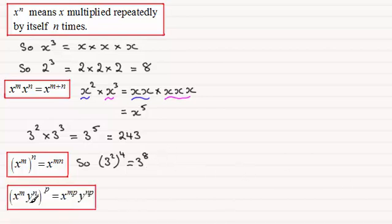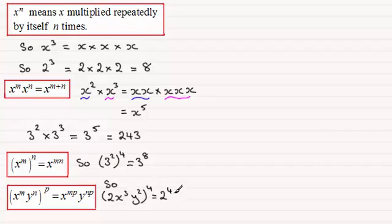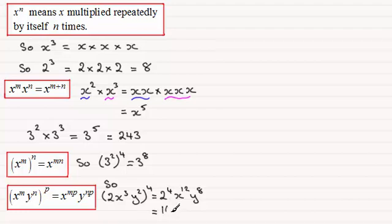There's also this rule: when you've got x to the power m times y to the power n, all to the power p, we apply the rule to each power, getting x to the power mp times y to the power np. For example, 2x cubed times y squared, all raised to the power 4, gives us 2 to the power 4, x cubed to the power 4 which is x to the power 12, and y squared to the power 4 which is y to the power 8. Simplifying, 2 to the power 4 is 16, giving us 16 x to the power 12, y to the power 8.